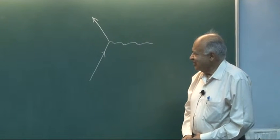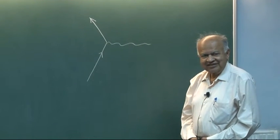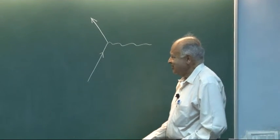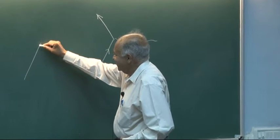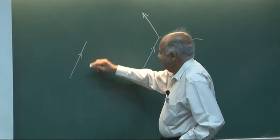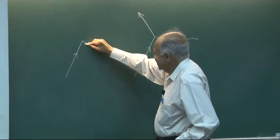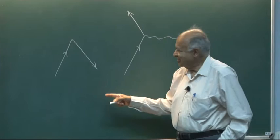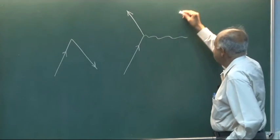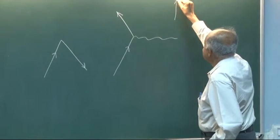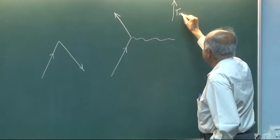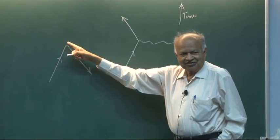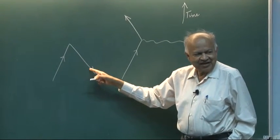But once you bring in relativistic quantum mechanics, then you find that there are other possibilities and one of them is like this: the electron is scattered in this direction. Now remember, we have a tacit understanding that time is going upwards. So it looks as if the electron has been scattered backwards in time.